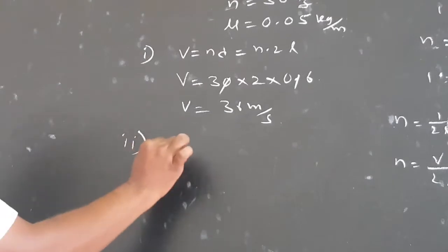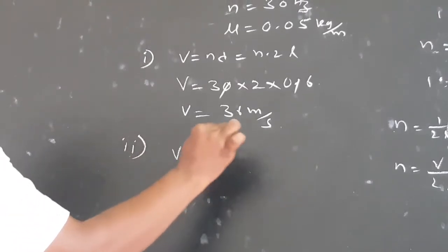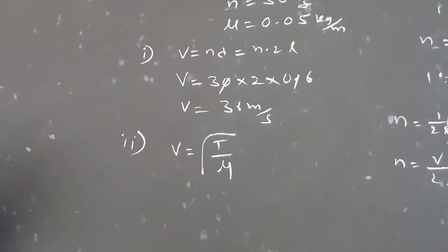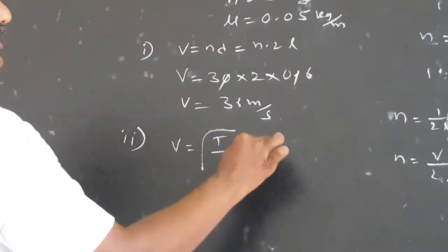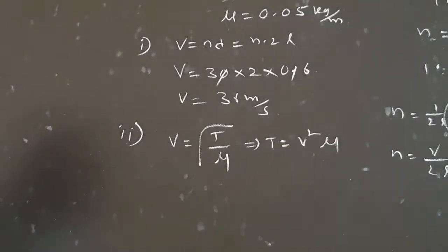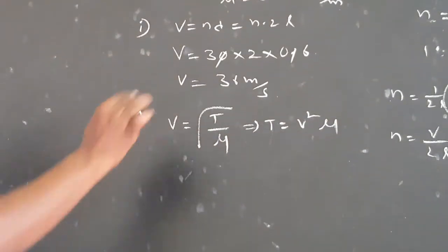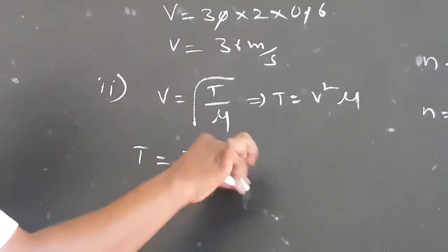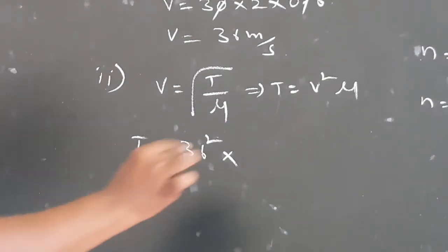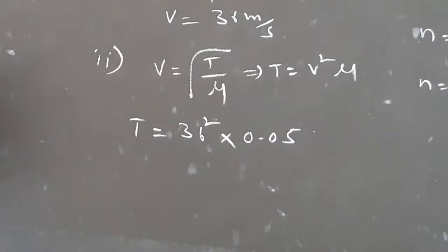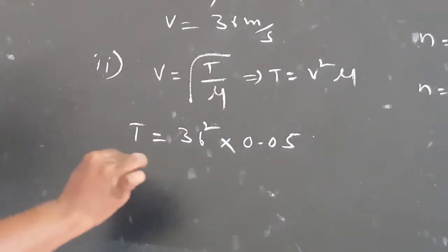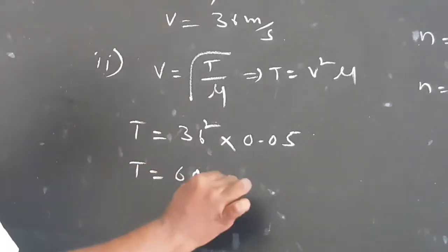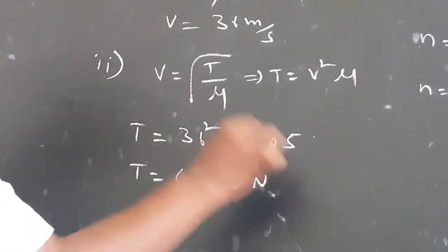For the second part, we find the tension. The velocity of transverse waves is V equal to under root of T by mu. Squaring both sides: T is equal to V squared into mu. Substituting: T is equal to 36 squared into 0.05. After simplification, T is equal to 64.8 Newton.